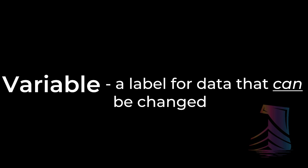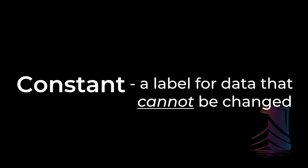In our lesson on variables, I defined a variable as a label for data that can be changed. Since constants are on the opposite side of the data coin from variables, constants are a label for data that cannot be changed. That means that constants must be initialized when they are declared, and then throughout the life of your program, they'll always have the same value.